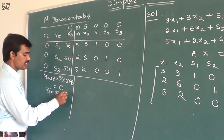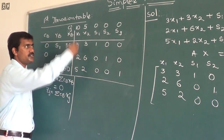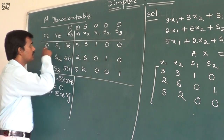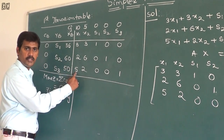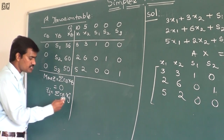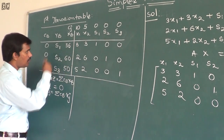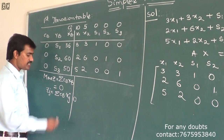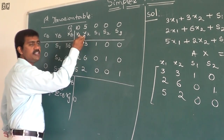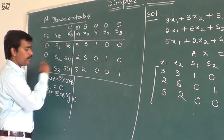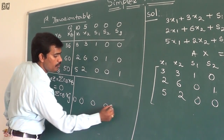After calculating z, we compute zj equal to summation cb times xj. For j=1: multiply cb values with x1 column — 0×3, 0×2, 0×5 — result is 0. For j=2: cb times x2 column — 0×3, 0×6, 0×2 — result is 0. All zj values are 0.